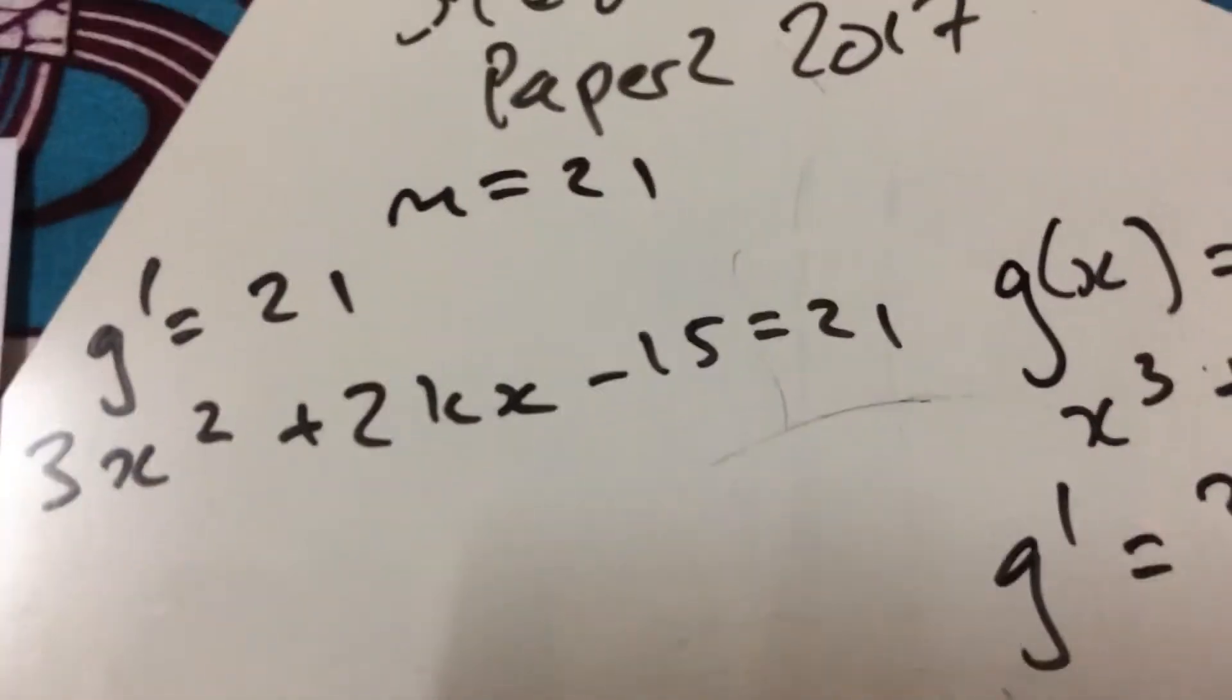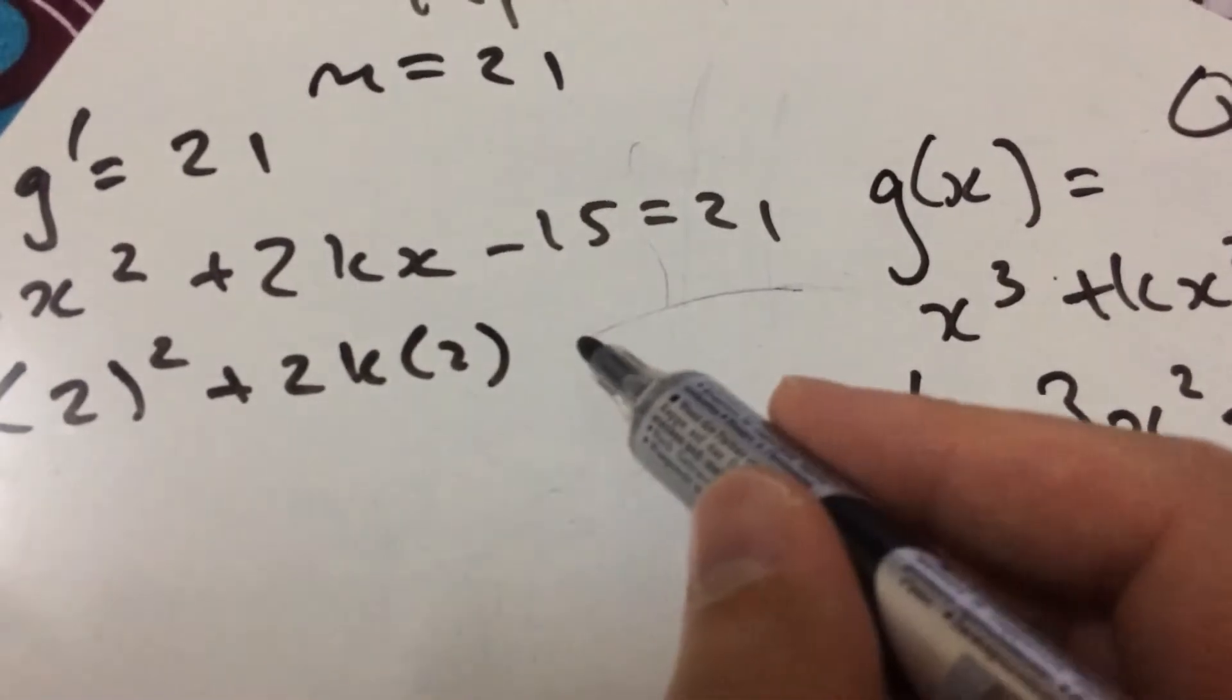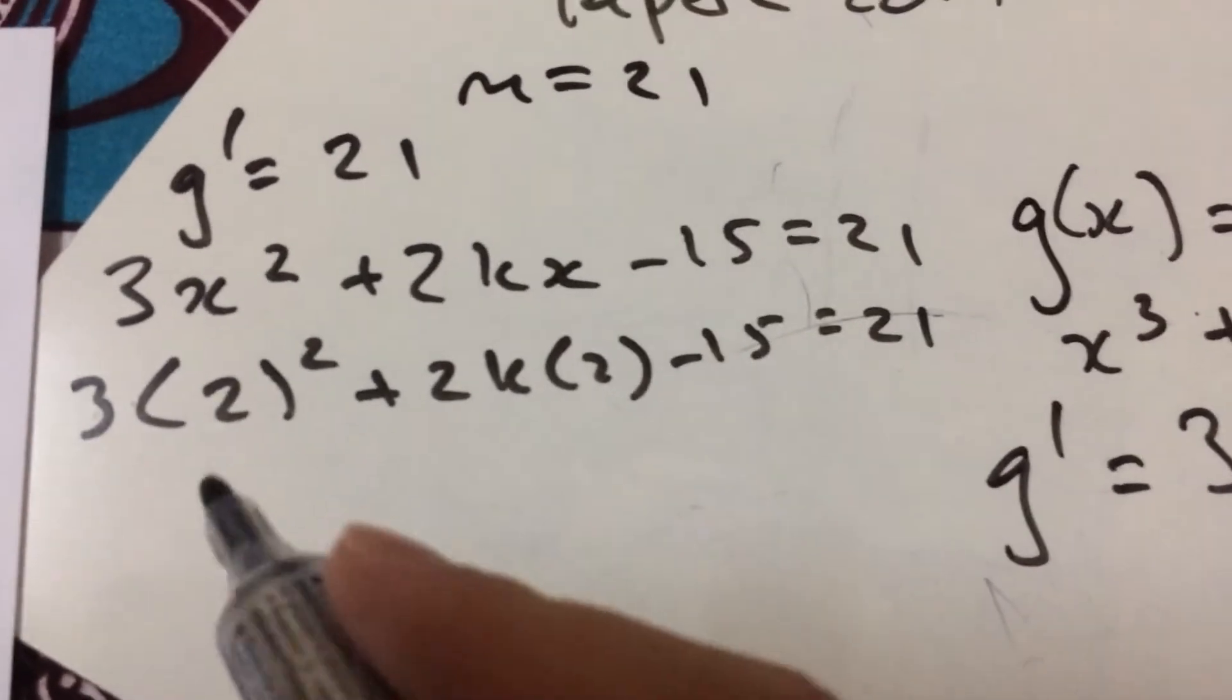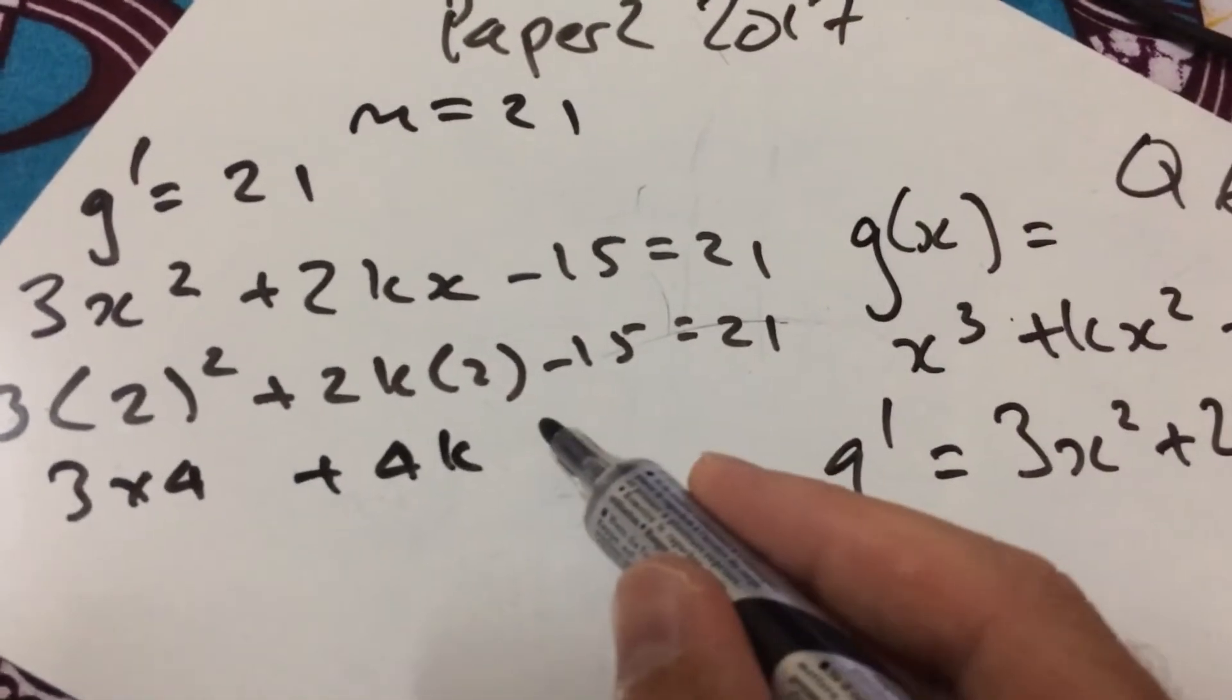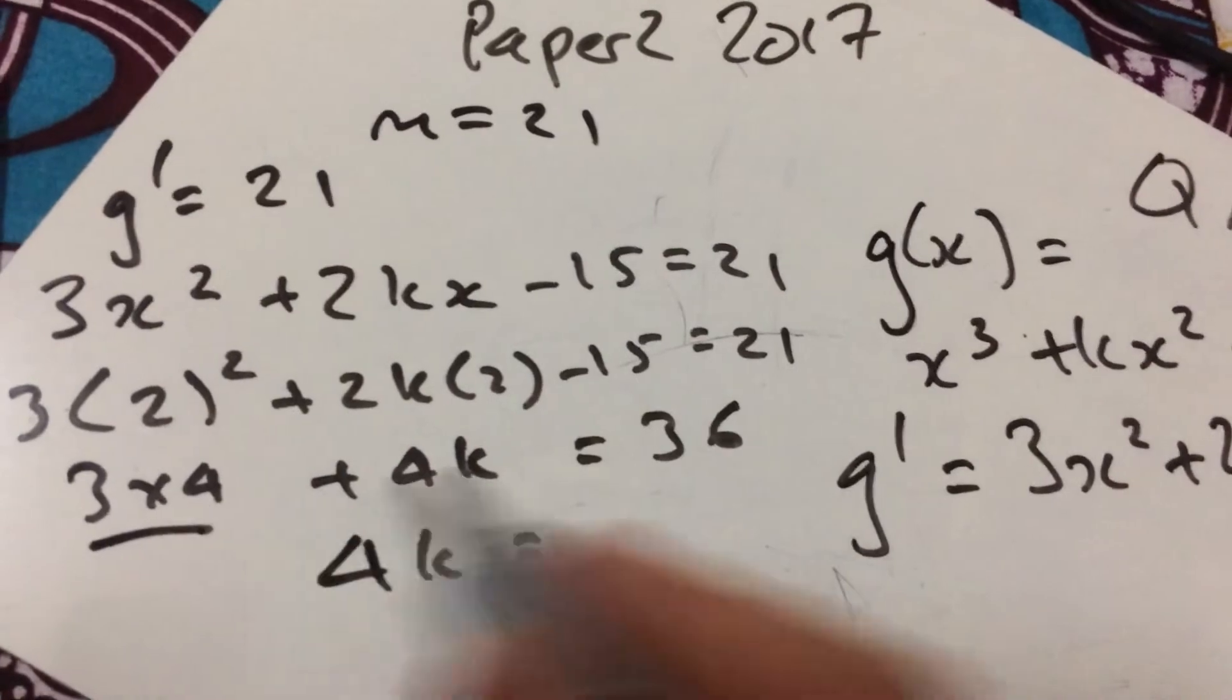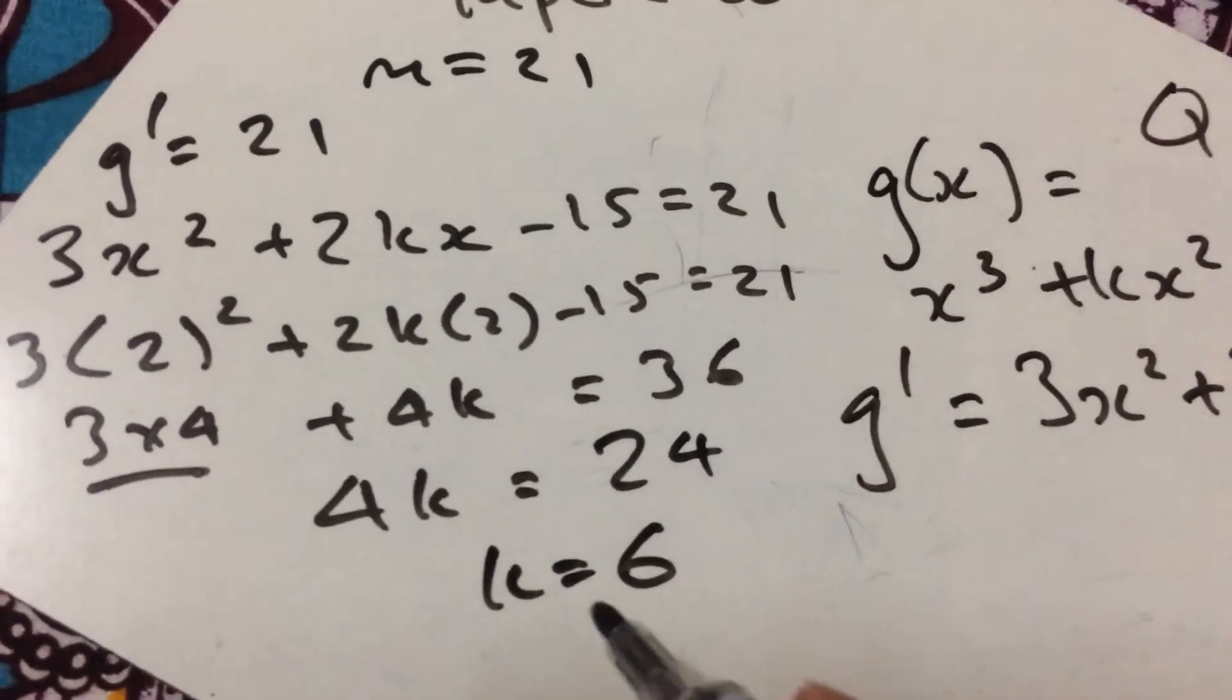But this happens at the point when x is 2, so now I'm going to substitute in for my 2. Minus 15 = 21. And we should show that k is 6 here, so we kind of have an idea of where we're going. 3 times 4 is 12, plus 4k, and move that 15 to that side, it's 36, and move that 12 to that side, so 4k equals 24. I know I'm skipping steps, but at DP level, we should be able to do this. So k = 6 as required.